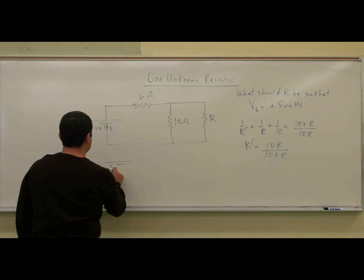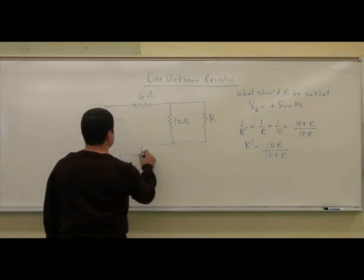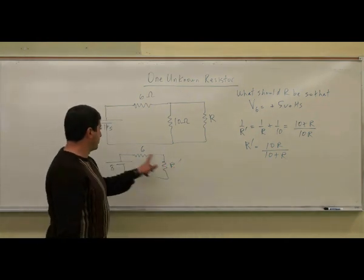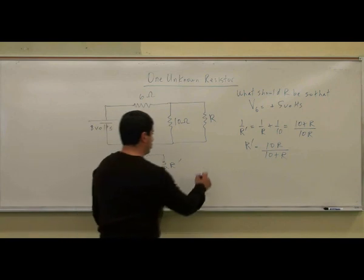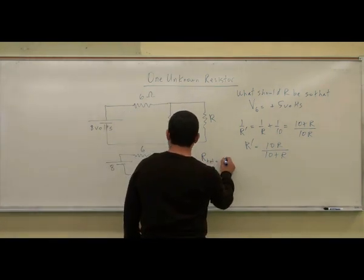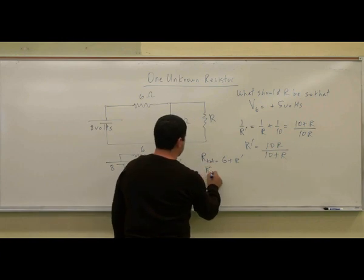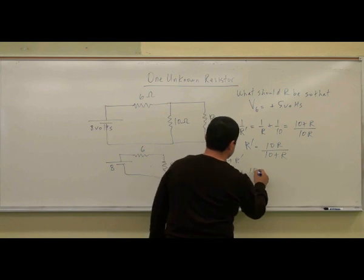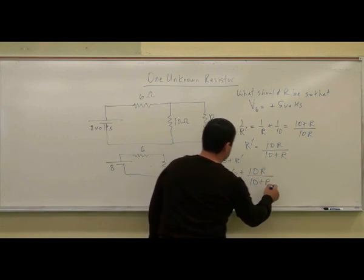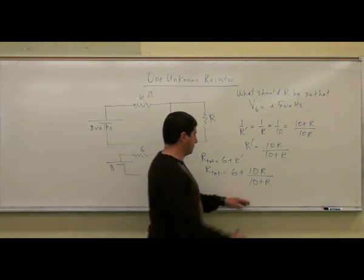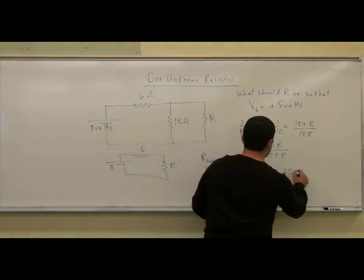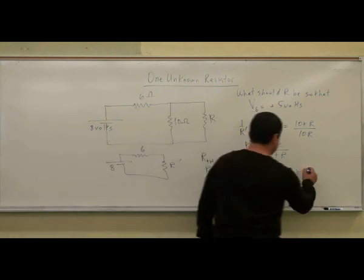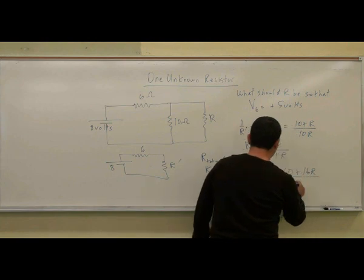So then you boil it down to a circuit that's easier, six and R prime. Then what's the total resistance of that? Well, they're in series, so the total resistance is six plus R prime, and then you get an expression for that, six plus this thing, and then you're going to have 60 plus six times R is going to give you 6R plus 10R, 16R over 10 plus R.